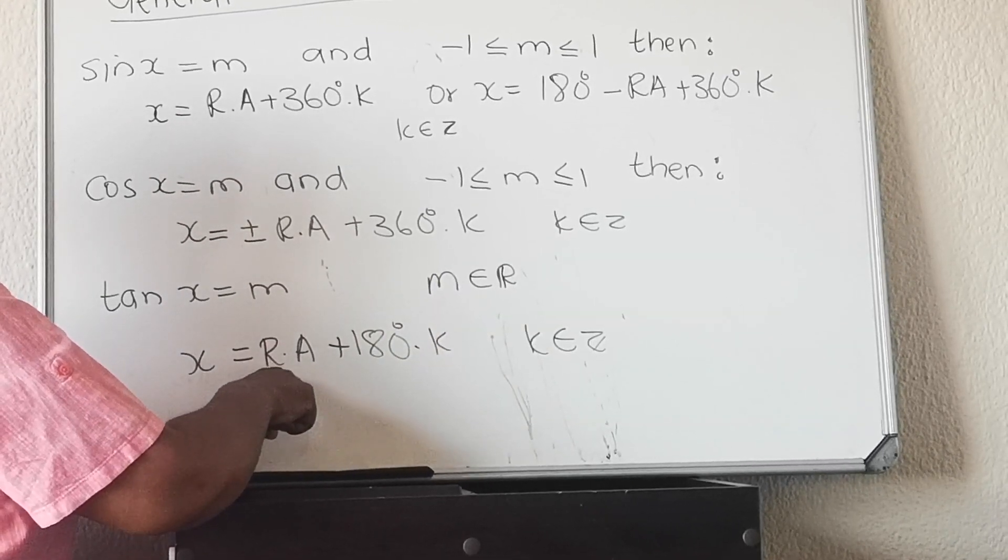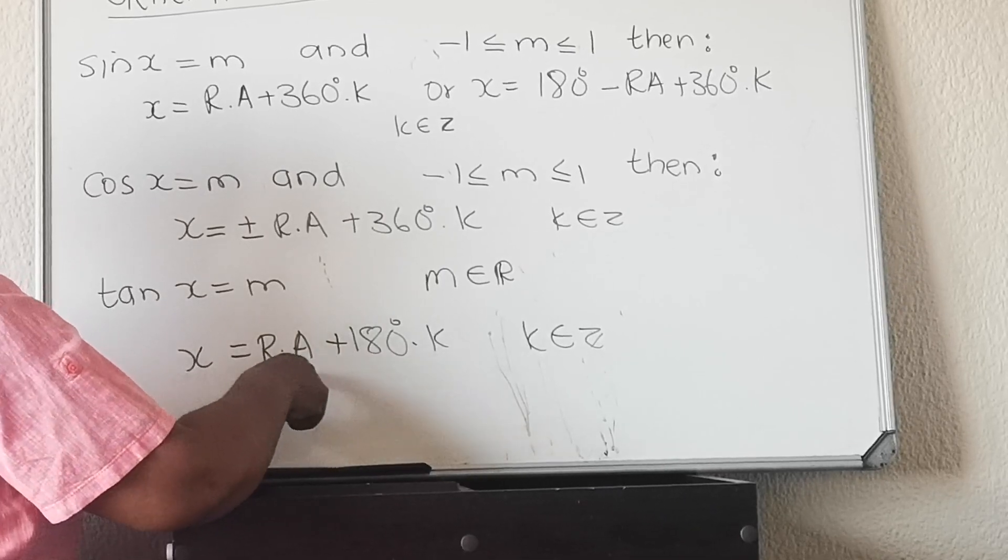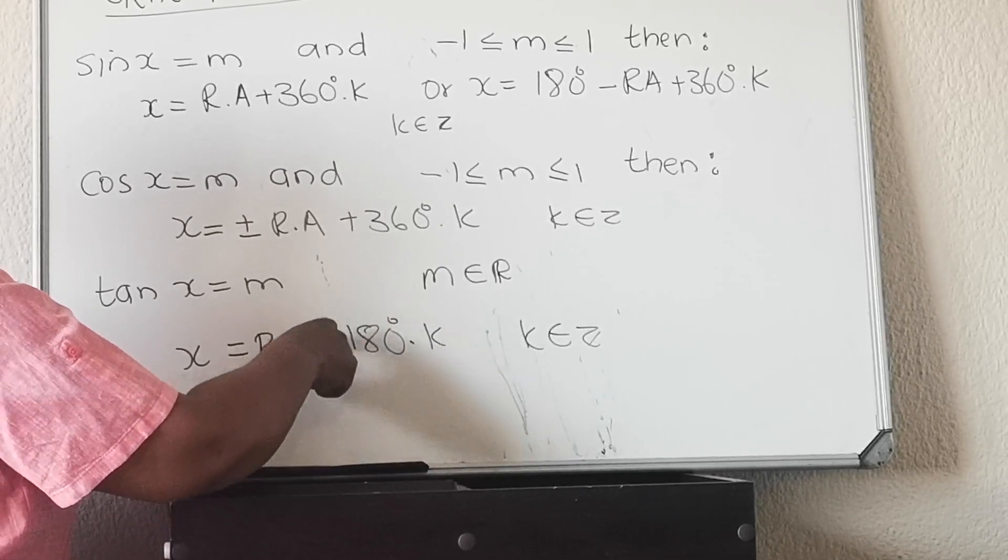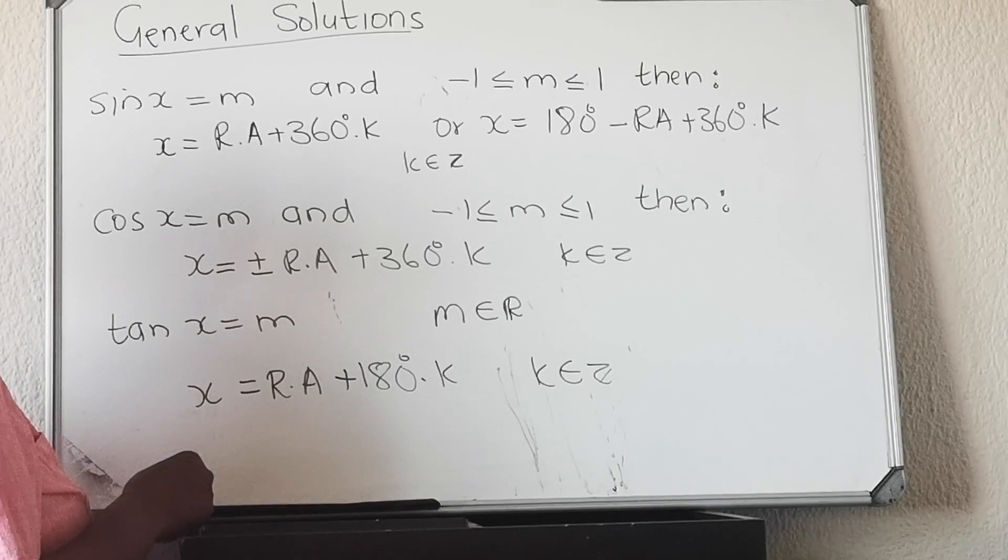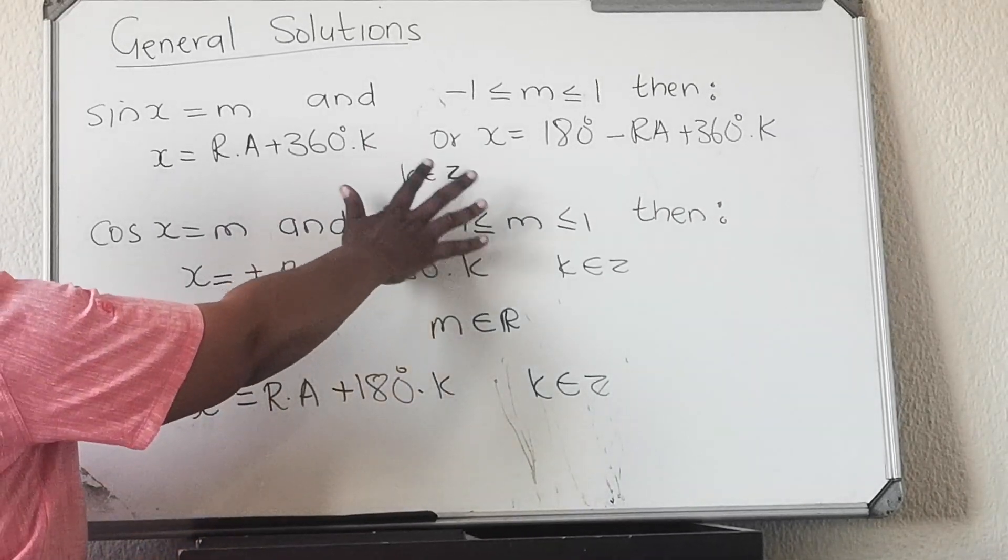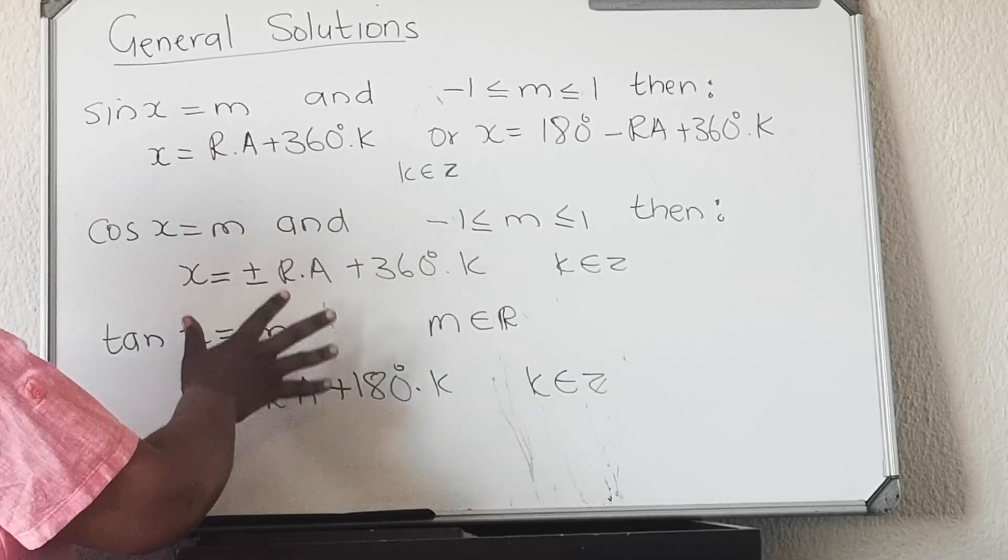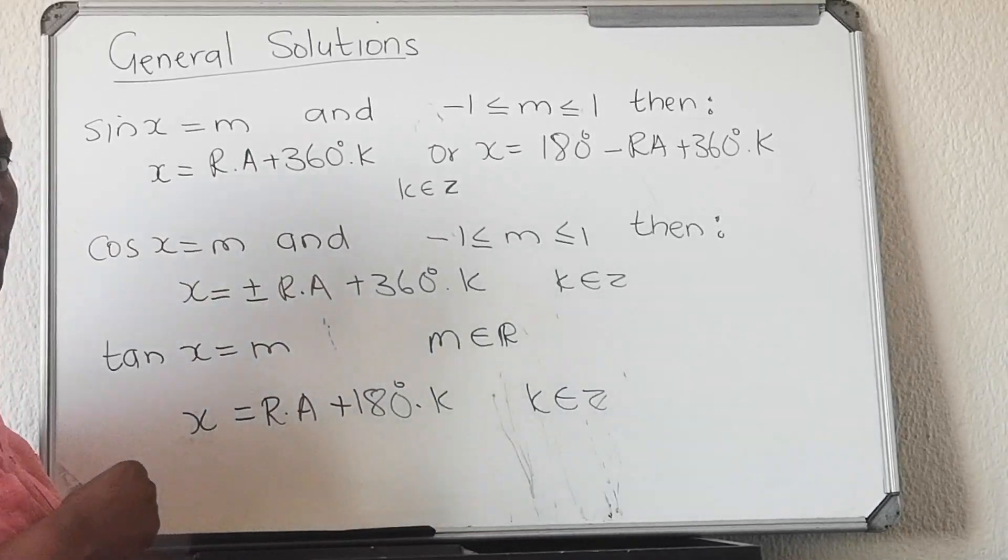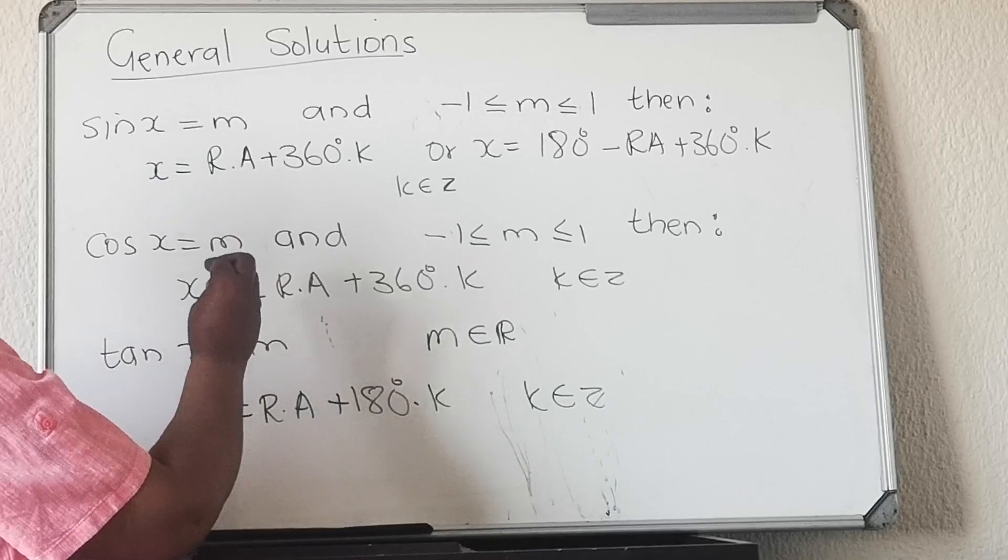With tan, tan doesn't have that restriction—you can have any number. But tan has one solution: reference angle plus 180k. Remember the period for tan was 180. It is very important for you to memorize these formulas before you start doing the problems.